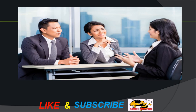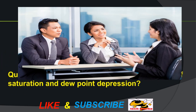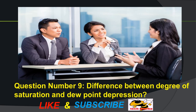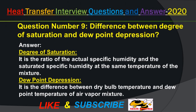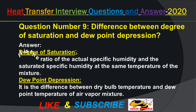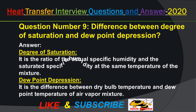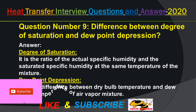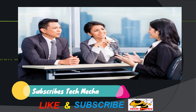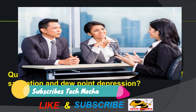Question number 9: Difference between degree of saturation and dew point depression? Answer: Degree of saturation is the ratio of the actual specific humidity to the saturated specific humidity at the same temperature of the mixture. Dew point depression is the difference between dry bulb temperature and dew point temperature of an air-vapor mixture.